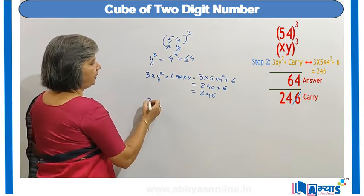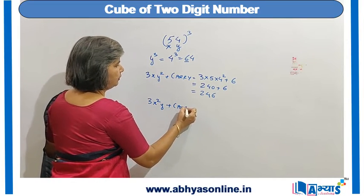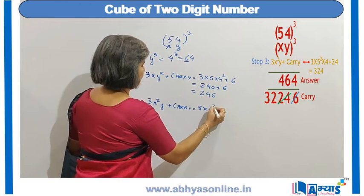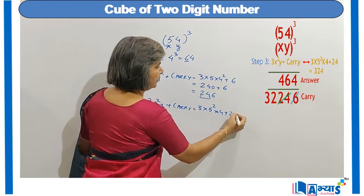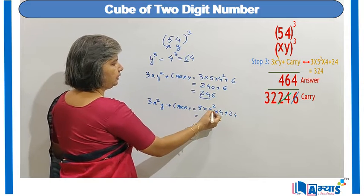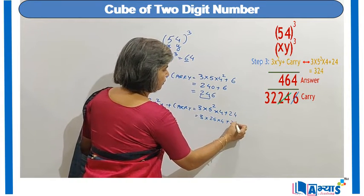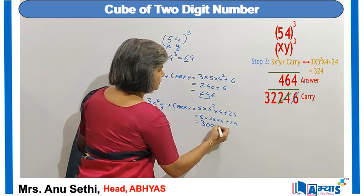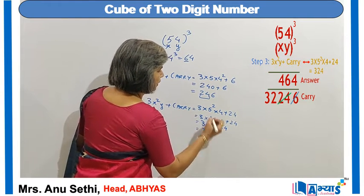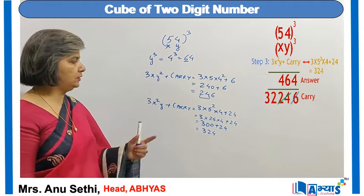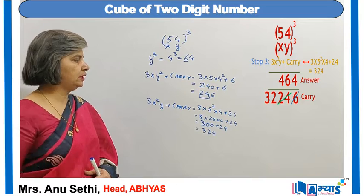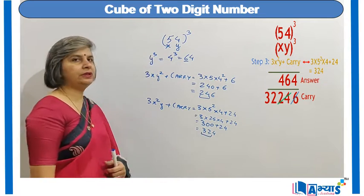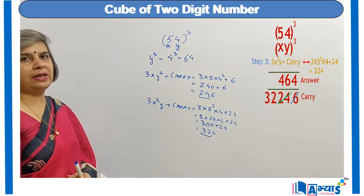In the third step I find the product of 3x²y and add the carry from the previous step, which is 24. So it is 3 × 5² × 4 + 24. That is 3 × 25 × 4 + 24 = 300 + 24 = 324. Again the digit at the units place, 4, is prefixed in the answer, giving 4, 6, 4, and the carry is now 32.